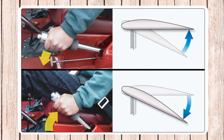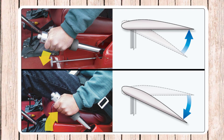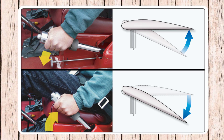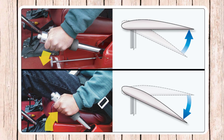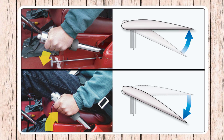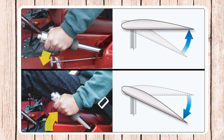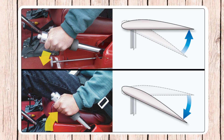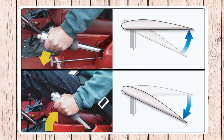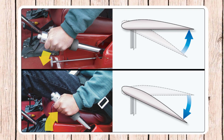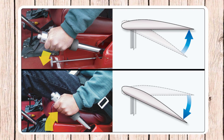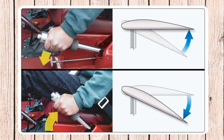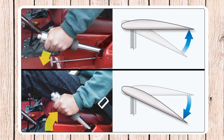To achieve maneuverability, pilots adjust the pitch of the rotor blades dynamically during flight. Increasing the pitch angle generates more lift on one side of the rotor disc, causing the helicopter to tilt in that direction. By varying the pitch angles of the rotor blades cyclically and collectively, pilots can control the helicopter's orientation and perform complex maneuvers with precision.